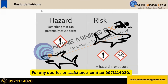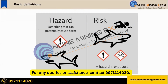I want to show you a small picture which illustrates the basic definition — the difference between Hazard and Risk. A hazard is something that can potentially cause harm. For example, a dolphin or shark present in the water is a source of hazard. But when you swim beside the dolphin or shark, then you are at risk.